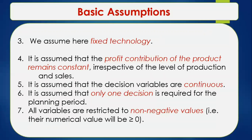The fifth assumption is that decision variables are continuous, meaning companies may manufacture products in fractional units — for example, 2.5 vehicles or 3.2 barrels of oil. This is also referred to as the assumption of divisibility. The sixth assumption is that only one decision is required for the planning period, showing that the linear programming model is a static model — a single-stage decision problem, unlike dynamic programming which is multi-stage.